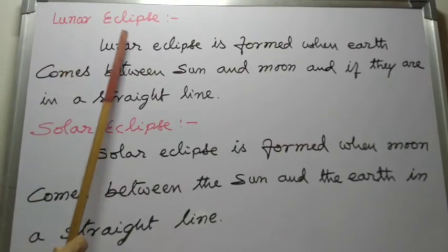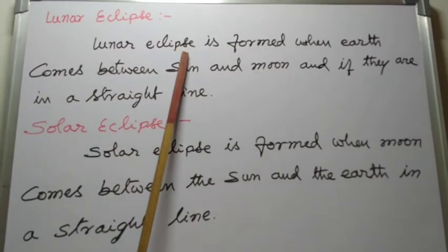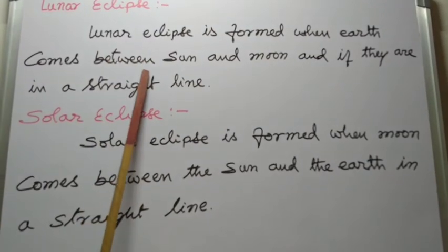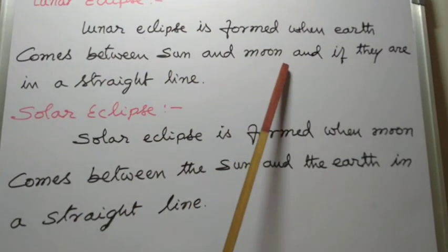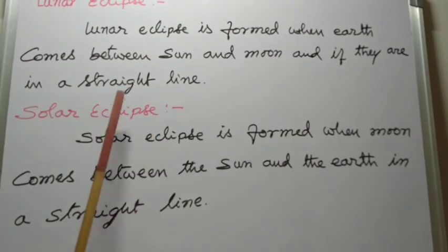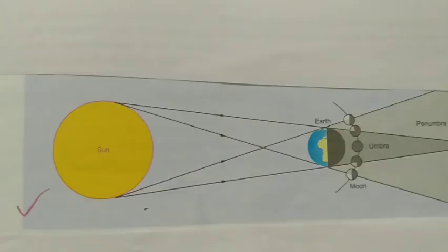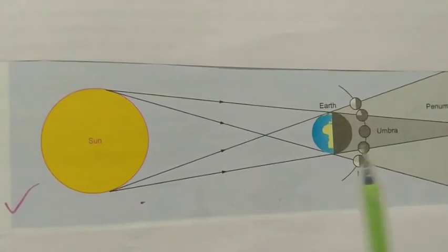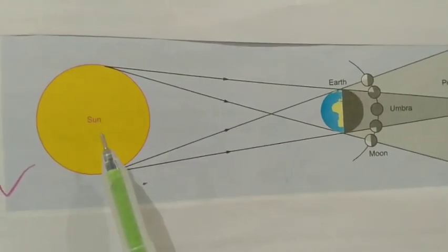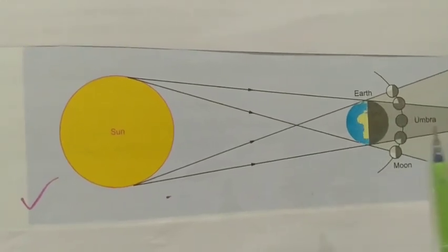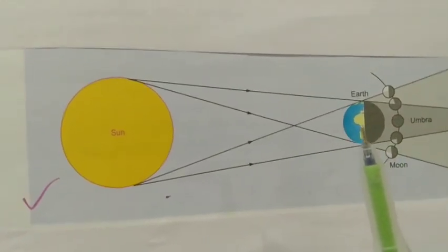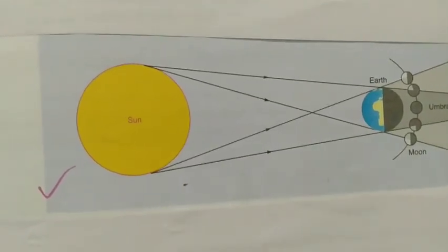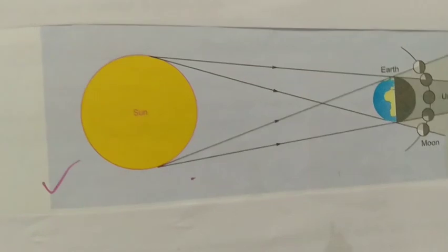Lunar eclipse is formed when the earth comes between sun and moon and if they are in a straight line. Lunar eclipse: sun, earth, moon. If the earth comes between sun and moon, lunar eclipse is formed.